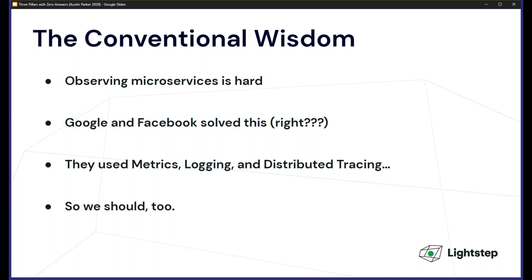But this isn't really based on an understanding of the problem from first principles. In general, we shouldn't be blindly emulating what Google did. When Google implemented tracing and a lot of their monitoring stack, they were dealing with problems of scale that most companies will never see — about 5 billion RPCs per second. There's a tension between scale and the feature set you can build; you give up features to reach that volume. Solutions outside of Google and Facebook are often more powerful from a feature standpoint because they don't have to scale to that magnitude.